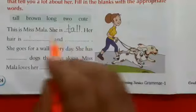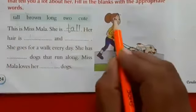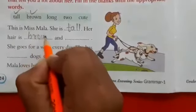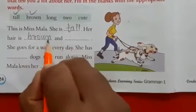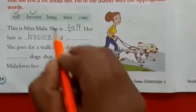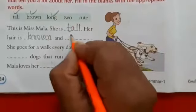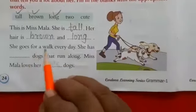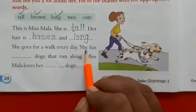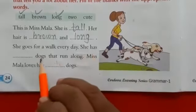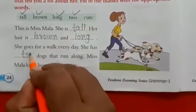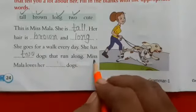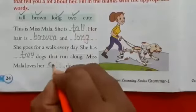This is Miss Mala. She is tall, so we use the word 'tall.' Her hair — look at the hair — her hair is brown, so we choose 'brown.' And look at her hair, she has long hair, so we use 'long.' She can make a nice bun. She goes for a walk every day. She has two dogs — how many dogs is she holding? Two dogs that run along. Miss Mala loves her cute dogs.